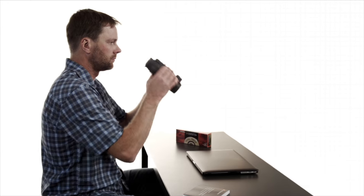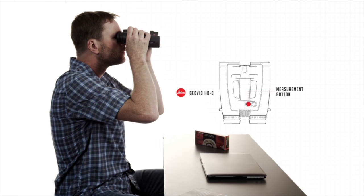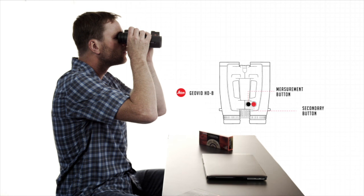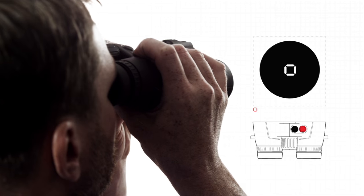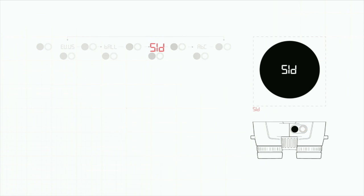Setting up the Geovid HDB is really simple. There are two buttons: the measurement button on the left and the secondary button on the right. To access the main menu, hold down the secondary button for three seconds. Press the secondary button to cycle through the four menu options: EU-US, the ballistics menu, the sight and distance menu, and the advanced ballistics compensation menu. To access any of these menus, press the measurement button and then the secondary button to make your selection.